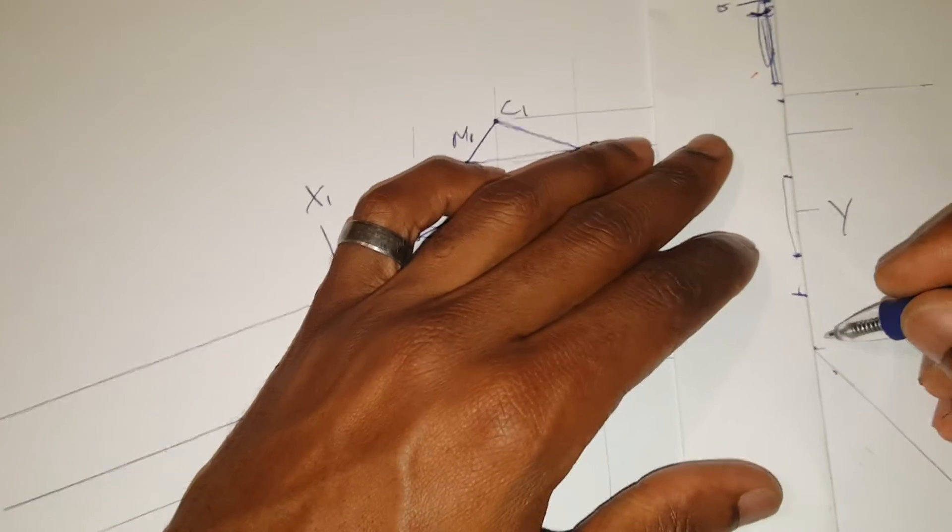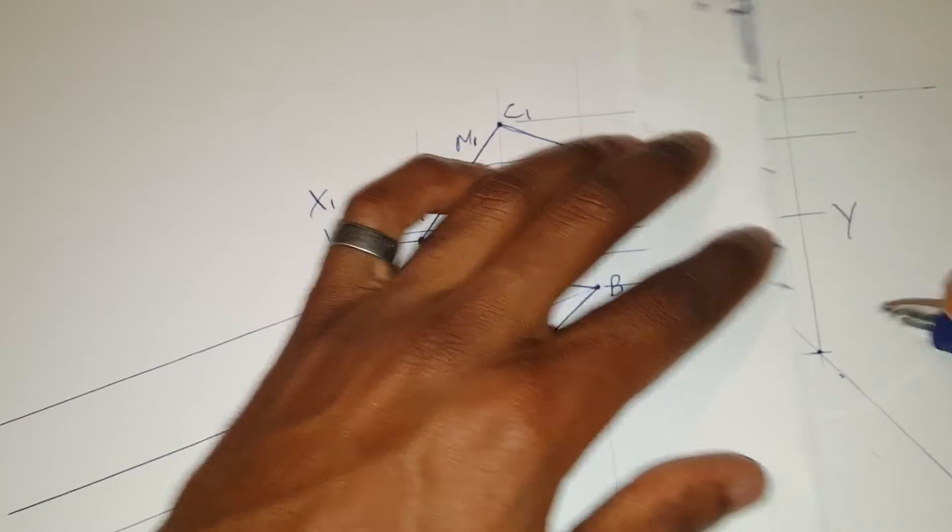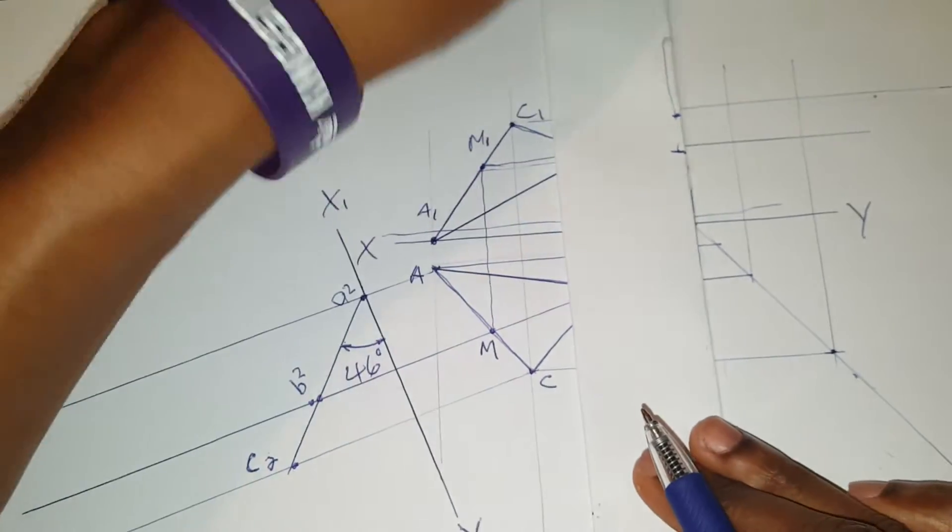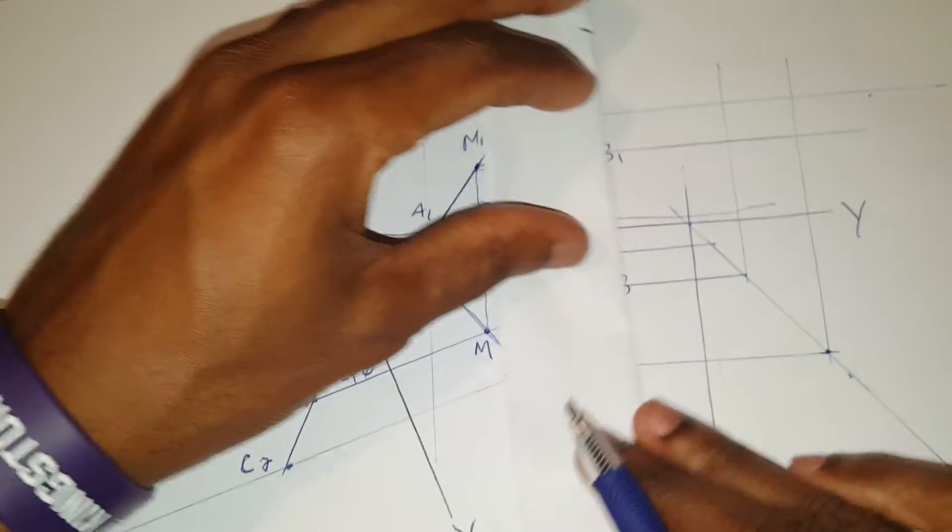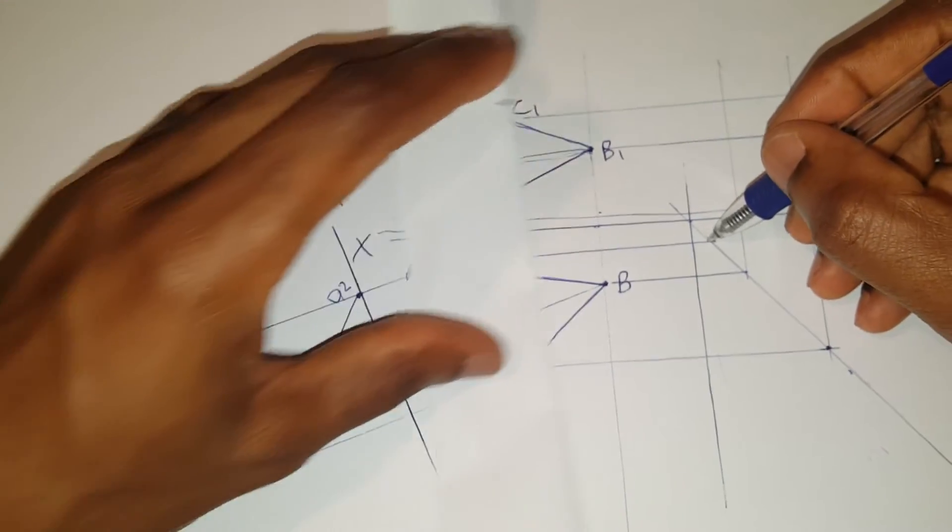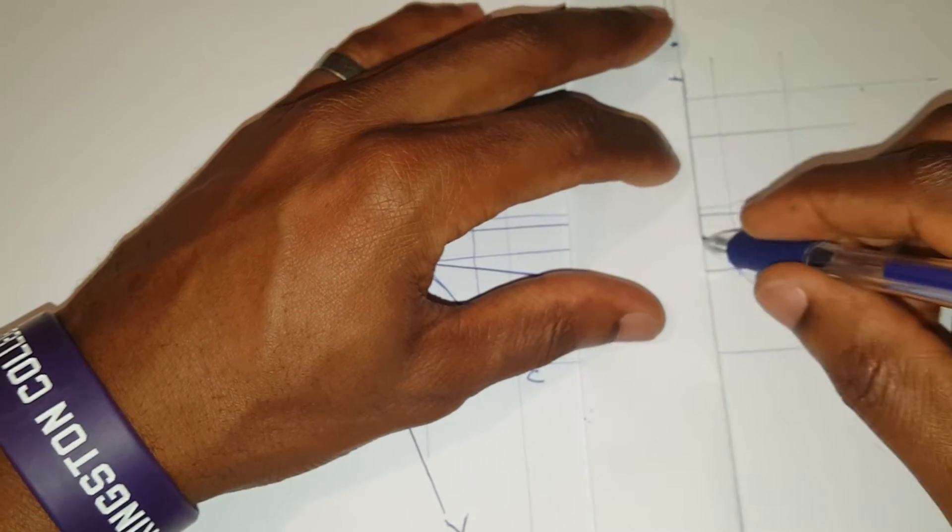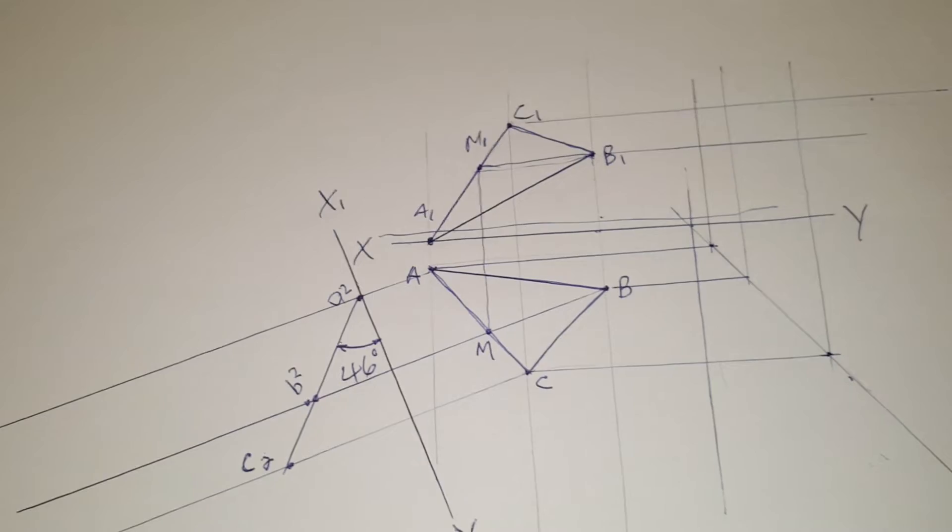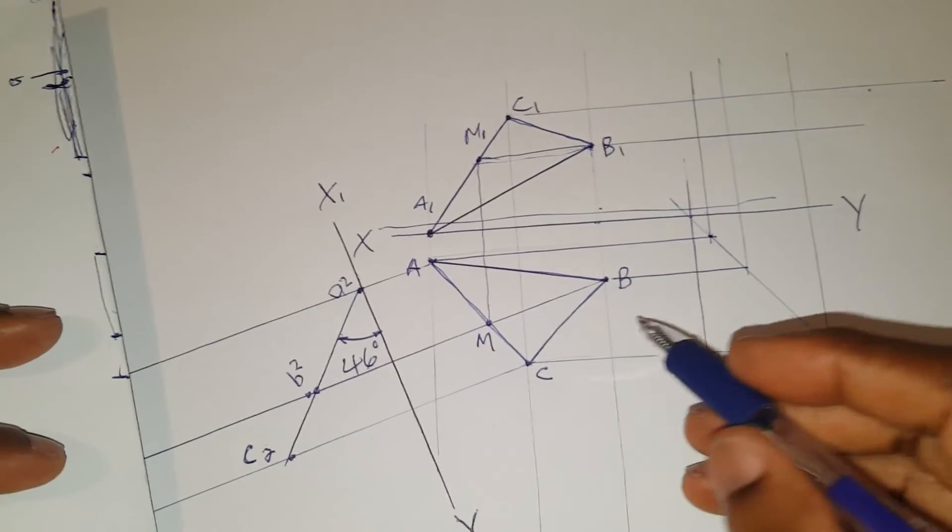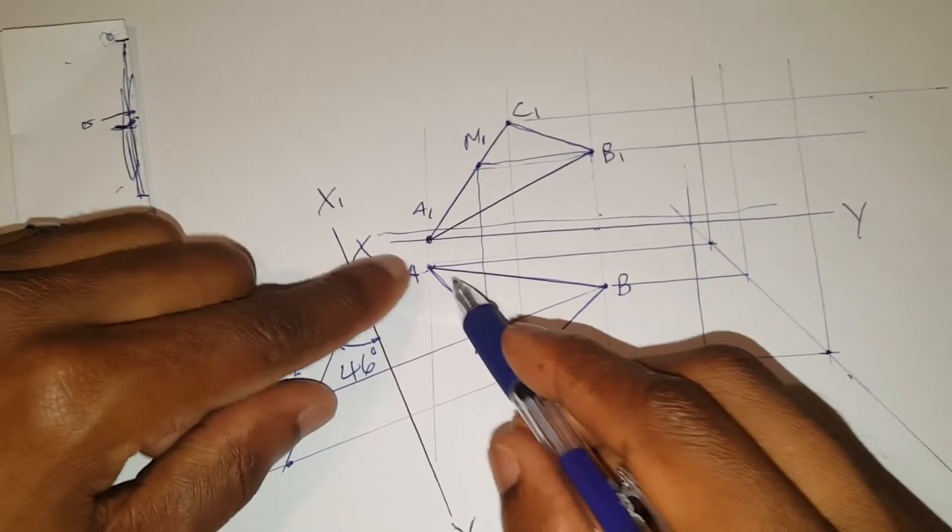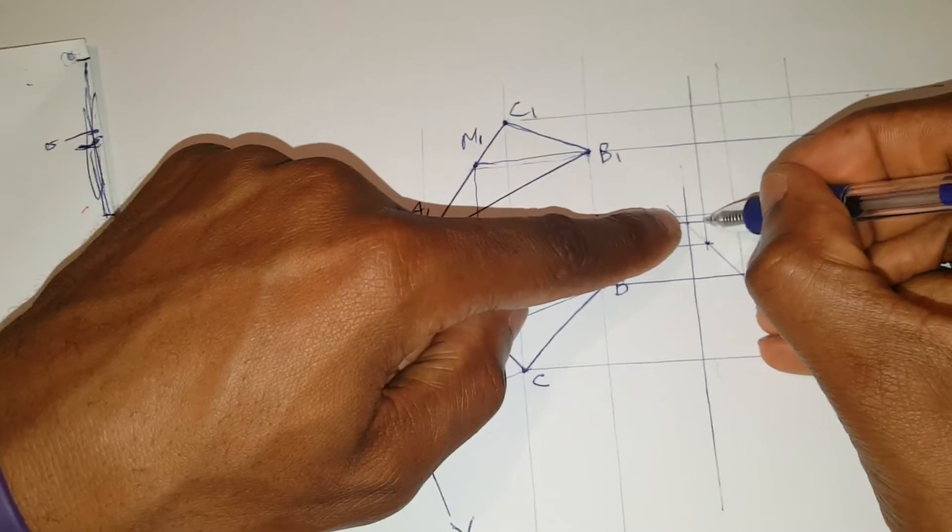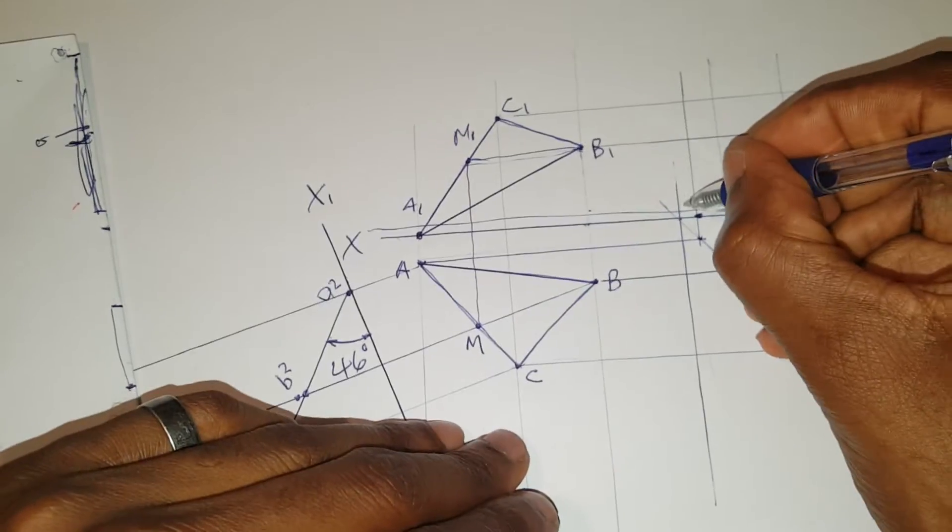Next step is to bring these points vertically upward. Next step is to draw a card. This is the corresponding point. So A from the plan goes across and meets with A here. This is point A.